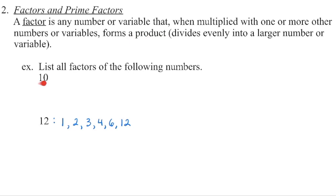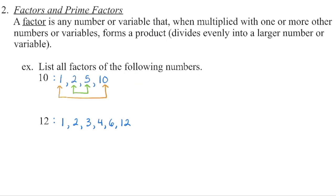So let's take the number 10. If we have to list all factors, the easiest way to make sure you don't miss any is to go in order. So I know that 1 times 10 will give me a product of 10. So will 2 times 5. 3 does not divide evenly into 10, nor does 4. At 5, you can see that we're back there. So 1, 2, 5, and 10 are the factors of 10, as are negative 1 times negative 10, and negative 2 times negative 5. But we're just going to list the positive ones for right now.